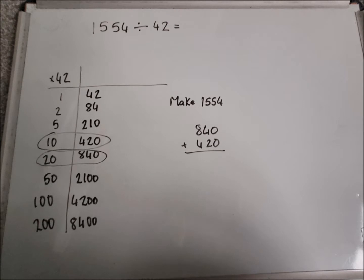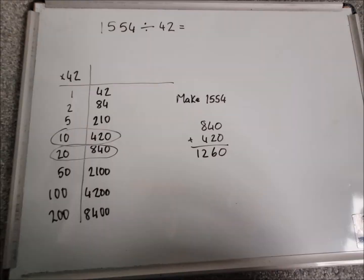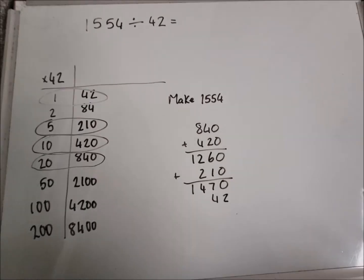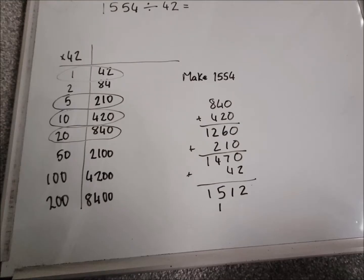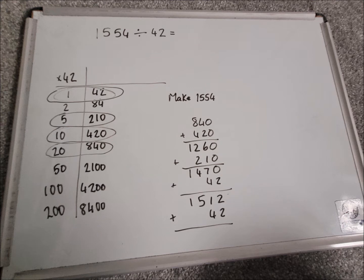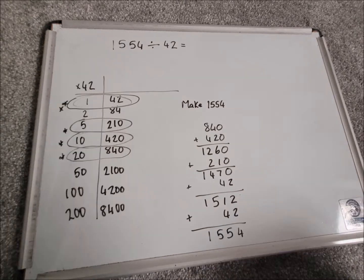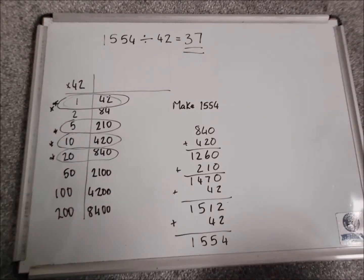So now I'm going to use these numbers to make 1554. So the biggest number I can start off with there is the 840, and I'm going to add it to the 420. The total makes 1260, so I'm a bit off. So I'm going to add in the 5, and I get 1470. So I'm still a bit short, so I'm going to add in the 1 there, the 42. Still a bit short, coming out at 1512. So if I add on another 42, this time I make my target of 1554. So now I look at the side of the coin card. I've used 20, 10, 5, and I've used the 1 twice. So if I add up 20, 10, 5, 1, and 1, I get 37, which is my answer.